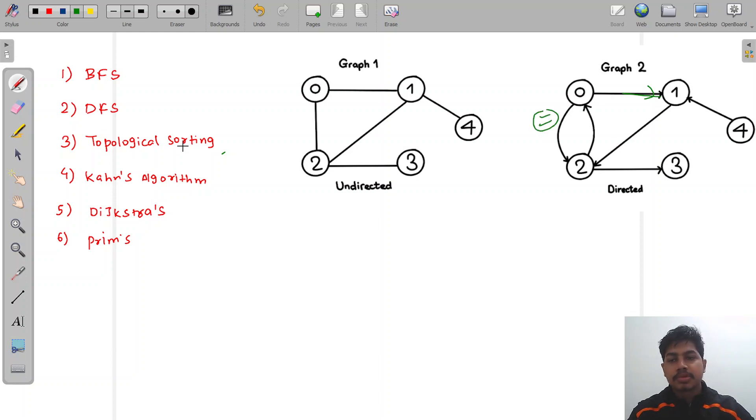Kahn's algorithm is the same as topological sorting, but in topological sorting we use DFS, whereas in Kahn's algorithm we use BFS to solve this type of problem.